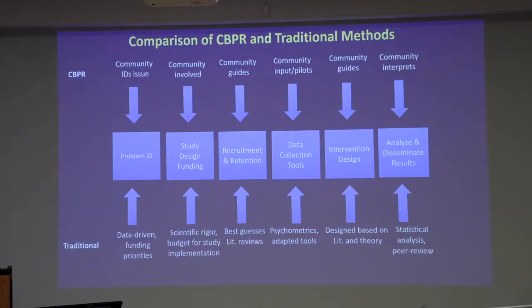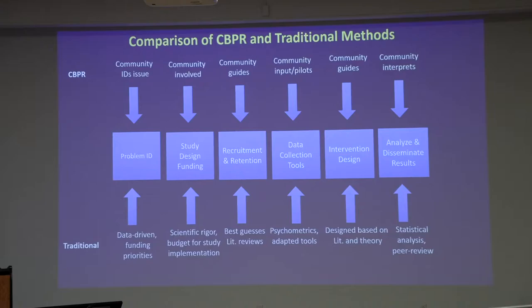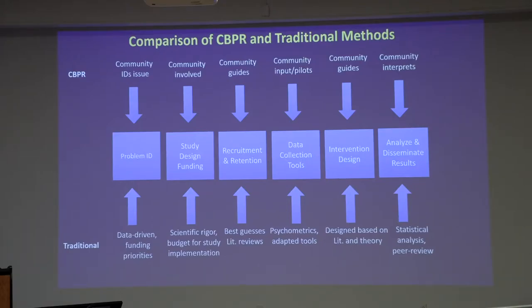This slide is a comparison of traditional methods compared to CBPR. For the traditionalists, we're pretty much data-driven and we determine what we're going to study based on funding opportunities. But for CBPR, we sit with the community, and they tell us what's affecting the health of their loved ones, their families, their communities. For traditional research, we have a budget that drives our implementation and scientific rigor. We have those same things with CBPR, but the community is involved with the process of study design. They kind of guide us towards the funding direction we should seek, and they guide us in recruitment and retention.